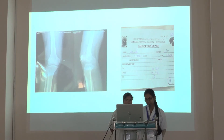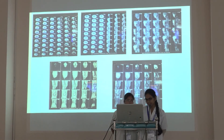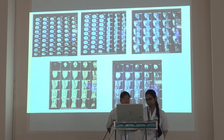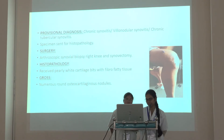X-ray showed calcifications. CT scan demonstrated nodular calcifications. Provisional diagnosis: chronic synovitis, villonodular synovitis, and chronic tubercular synovitis.